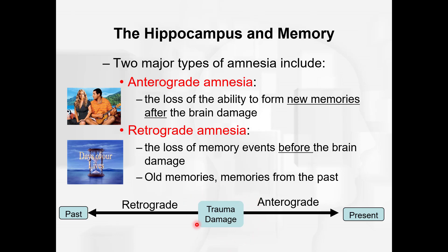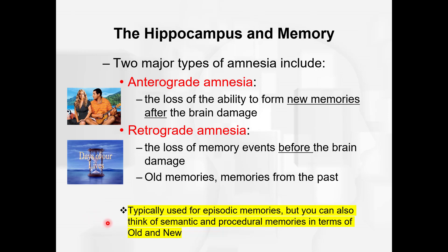Here's another way of looking at it. We have the trauma or the damage as the reference point. Anterograde is where you can't form new memories going forward. Retrograde is going back in the past where you have trouble remembering things — you can't recall those old memories. These distinctions are typically used for episodic memories, but you could also think about them in terms of semantic and procedural memories — whether we have memories formed before the brain damage, and whether we can form new memories after.